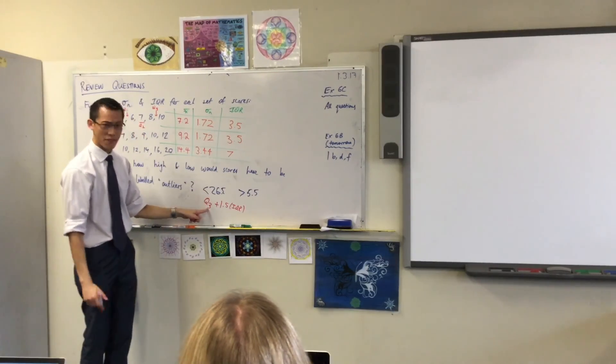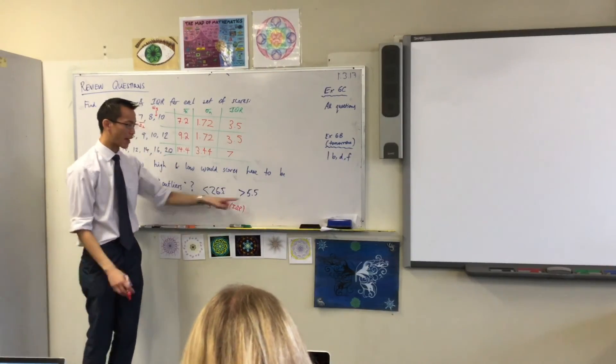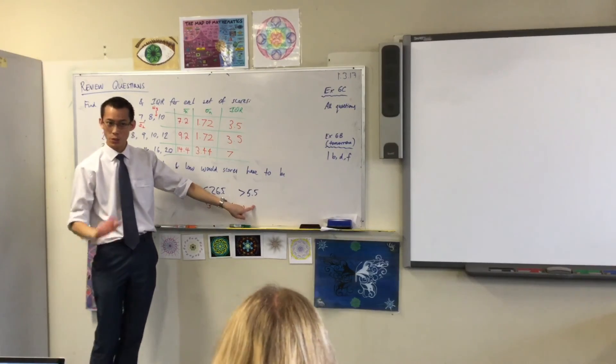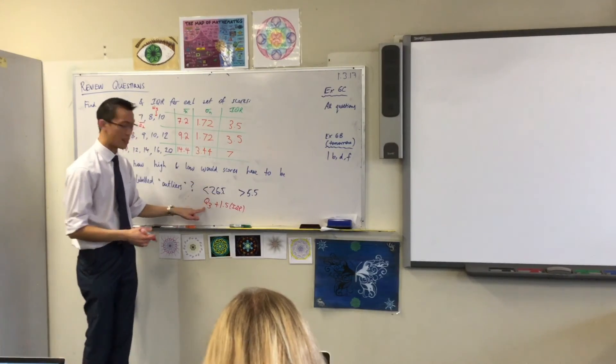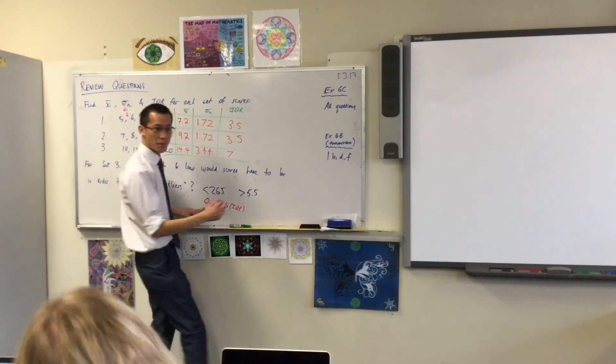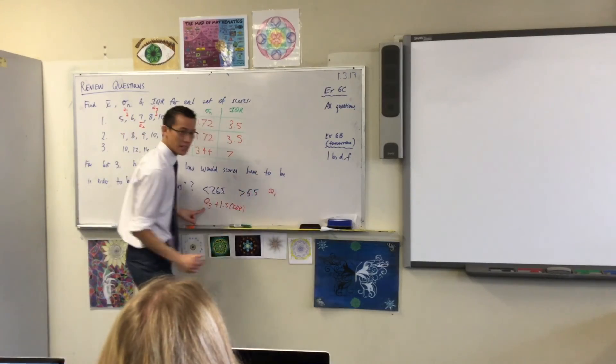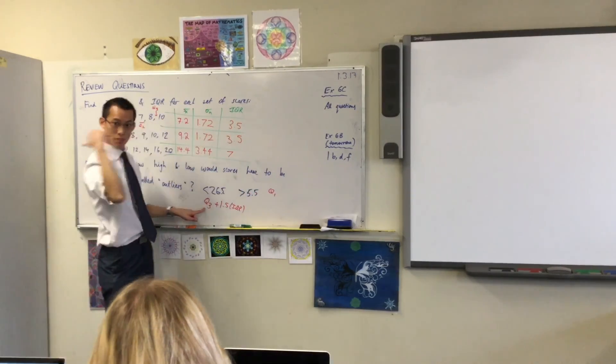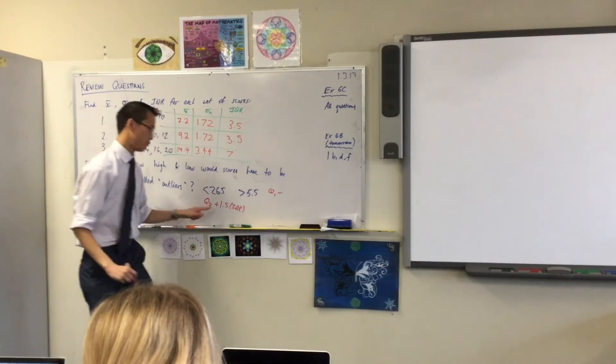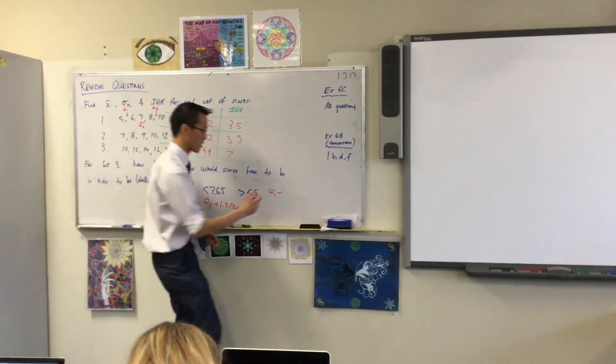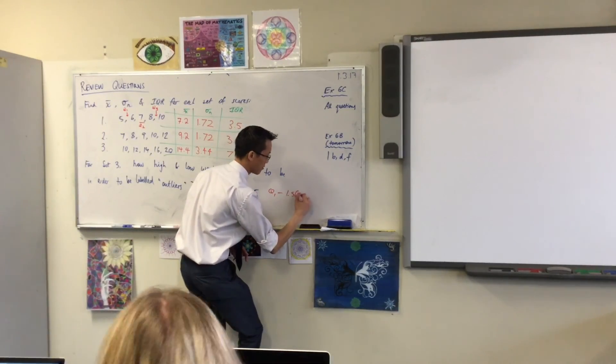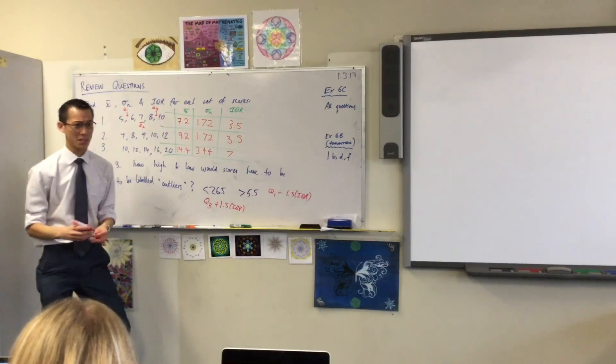To work out this one, you do it in reverse, right? So instead of the upper quartile, I'm going to look at that lower quartile. Instead of adding, I'm going to subtract. But it's still one and a half times the interquartile range. Happy? Does that make sense?